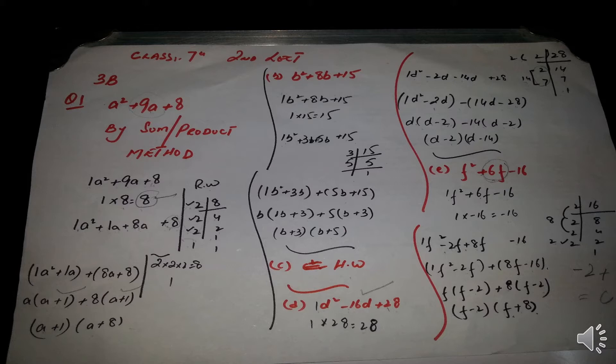We take the LCM of 8: 2 × 2 × 2. This gives factors 1 and 8, both smaller than 9, both with the same positive sign: plus 1 and plus 8. We place the first and second terms in one bracket, third and fourth in the other. Taking 'a' common from the first bracket and 8 from the second, both brackets share the same identity. The factors are (a + 1) and (a + 8).